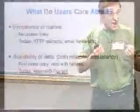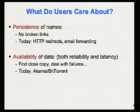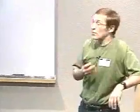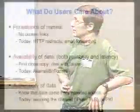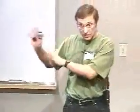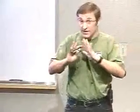The other thing users care about is actually getting the data — both low latency and high availability, so that if any copy of the data is around, they can access it. Today we use things like Akamai and BitTorrent to find copies. Lastly, users care about the authenticity of the data — meaning the data came from the source they expected. Today we do that by securing the channel or through a PKI.